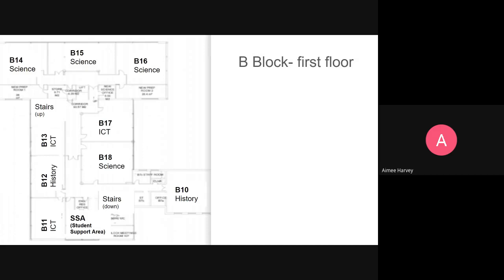Upstairs the room numbers become double digits — B10, B12, for instance — because we're upstairs. You'd come up the stairs and in front of you would be an IT room, and next to that another IT room. Going around the corner you've got some Science rooms, and further along another Science room, a History room, another IT area, and this is our Student Support area — a really important place where you go to get support and help if you need anything.